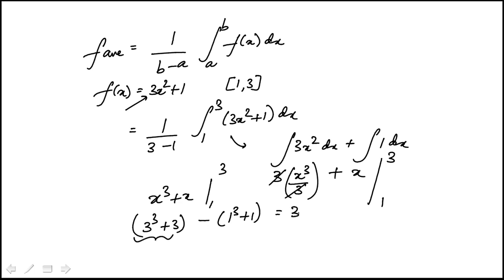That's 27 + 3 is 30 minus 2. That's 28 and this piece we have to remember. So 1 over 2, that becomes 14. That's the answer.